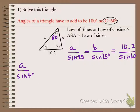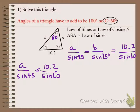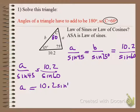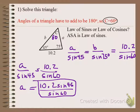A over sine 45° equals 10.2 over sine 60°. Multiply both sides by sine 45°: A equals 10.2 times sine 45° divided by sine 60°. Put this all into your calculator in one keystroke — don't do it in pieces. Also check that your calculator is in degree mode, not radian mode. The calculator defaults to radian mode, so you have to change it.